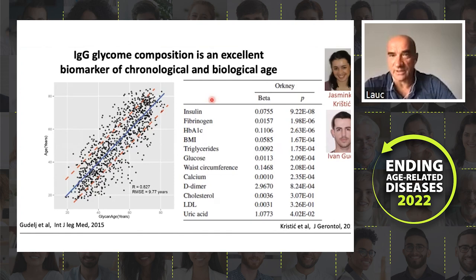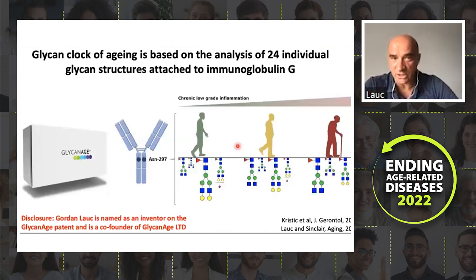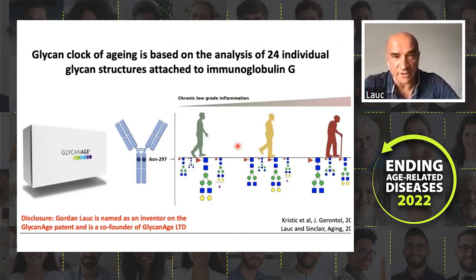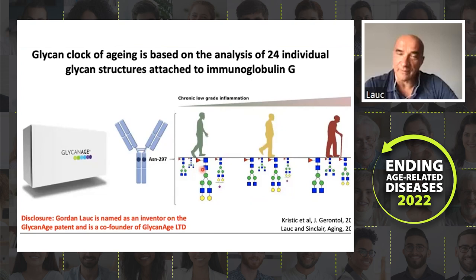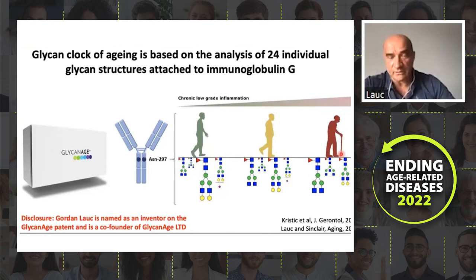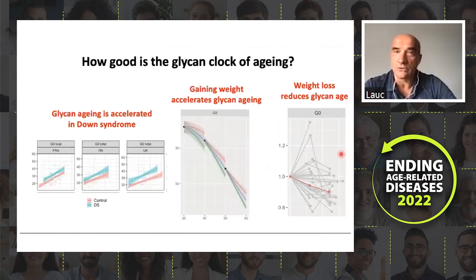Today we have this glycan age index, which is a commercially available test. Of course, I'm one of the co-founders and co-inventors of this test, and I'm heavily conflicted — so please use your common sense in judging what I'm saying. What we know is that young people have glycans which suppress inflammation, and as people age they accumulate more glycans which promote inflammation, driving a cycle of inflammaging which is both a biomarker of aging and a driver of aging. The glycan age clock ticks all the boxes that were mentioned for a robust aging clock.